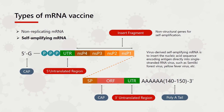Virus-derived self-amplifying mRNA involves inserting the nucleic acid sequence encoding the antigen directly into a single-stranded RNA virus, such as Semliki Forest virus or yellow fever virus. It usually has a high relative molecular weight and can express a large number of antigens. Most self-amplifying mRNA vaccines are based on the alphavirus genome, in which the genes encoding the mRNA replication mechanism are intact, but the genes encoding structural proteins are replaced by the target genes.